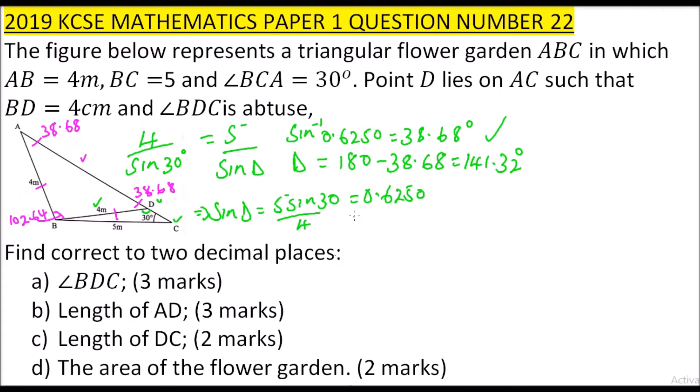Now we have this angle, we have these other two angles, so we are looking for the opposite side of this angle. We can use the sine rule and say AD, the side that we are looking for, divided by the sine of the angle opposite to that side which is 102.64, equals 4 divided by sine 38.68. Implying our AD can be obtained by multiplying 4 times sine 102.64 all divided by sine 38.68. When you compute that, you will be able to get 6.25 centimeters. So that is how you get AD.